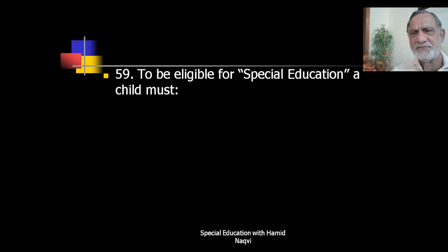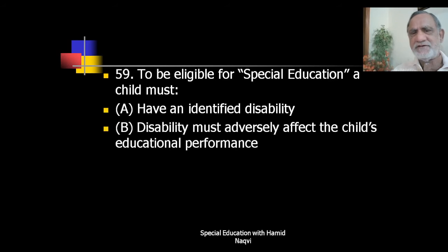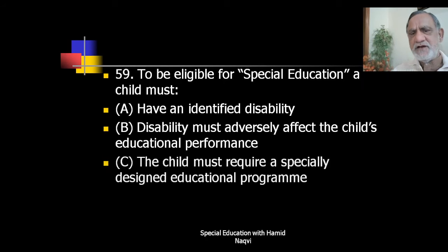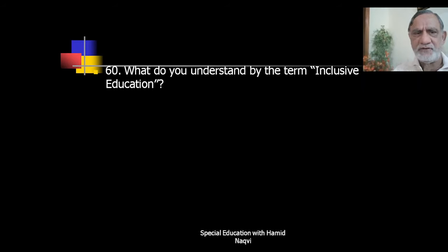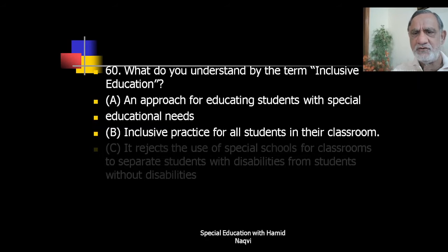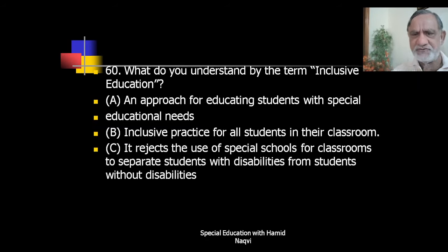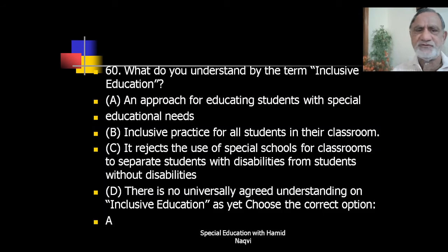To be eligible for special education, a child must have an identified disability; the disability must adversely affect the child's educational performance; and the child must require a specially designed educational program — all of the above. What do you understand by the term inclusive education? The correct option is: an approach for educating students with special educational needs.